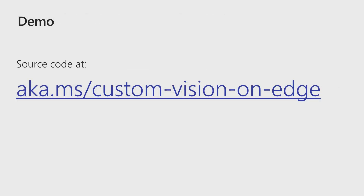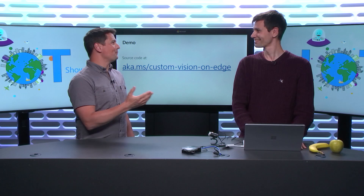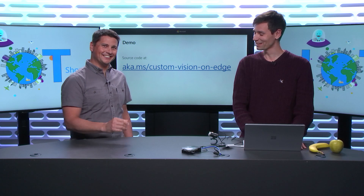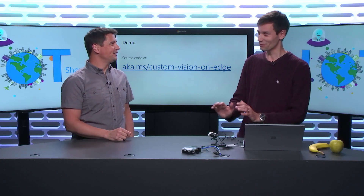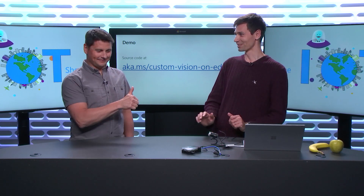Now let's look at the demo — Custom Vision on Edge. The source code and sample code is published, so you can have a look. If you have a Raspberry Pi and a camera and you want to recognize a banana from an apple or something else, it's Custom Vision, so you can customize it however you want.